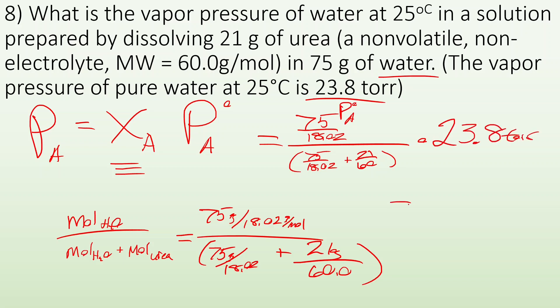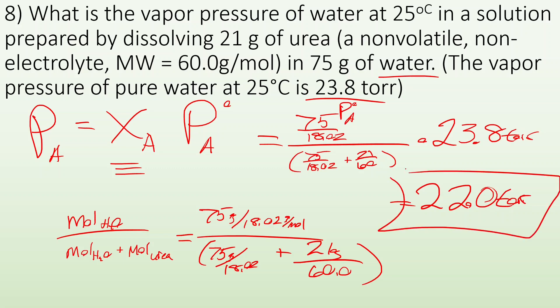Plugging and chugging: (75/18.02) divided by (75/18.02 + 21/60) times 23.8 torr gives a final answer of 22.0 torr. The vapor pressure went down from 23.8 to 22.0 torr.